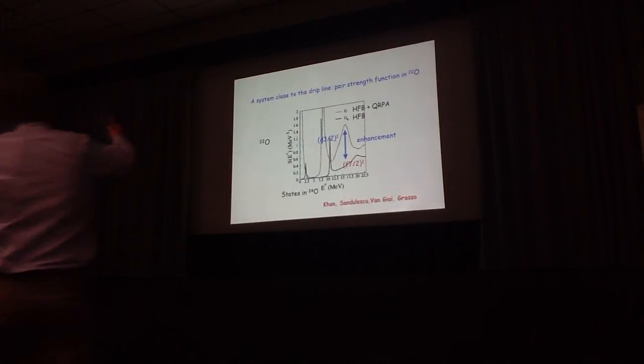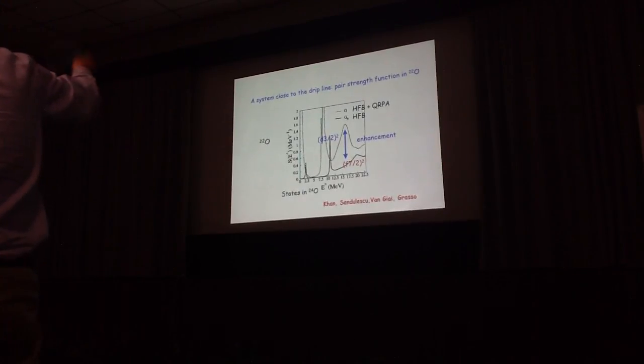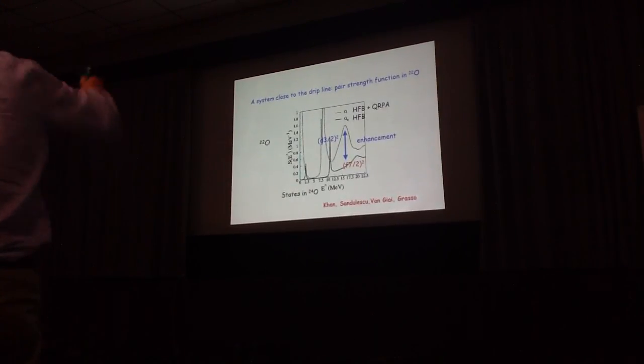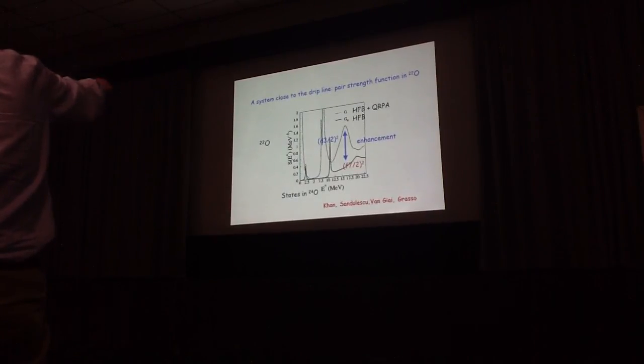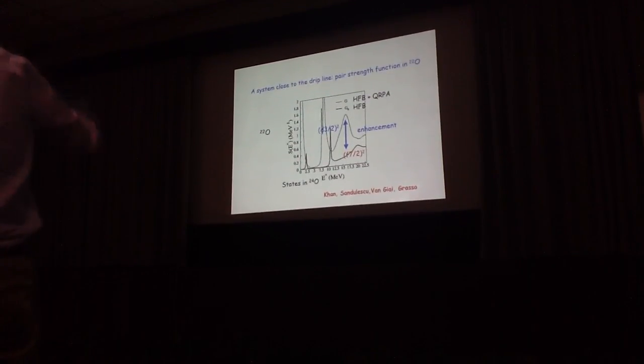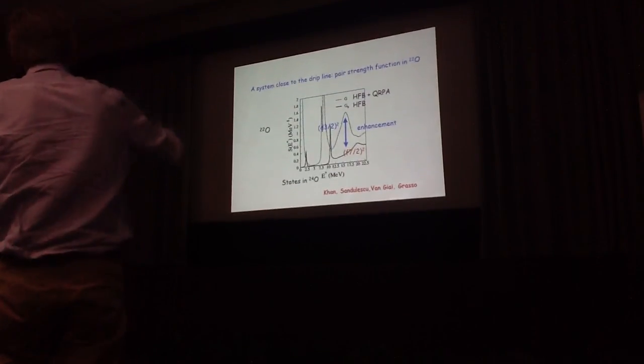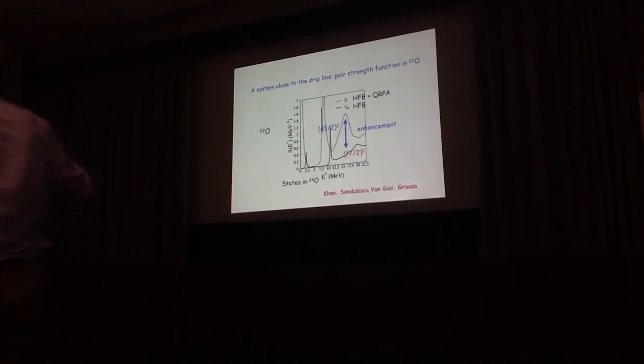Another example, if you now approach the drip line, this is oxygen-22. Again, you can calculate in R3-Fock-Bogoliubov plus QRPA the two-particle response. And again, you can compare the unperturbed response with the perturbed response, and the enhancement that you obtain is what you say is due to the effect of the pairing interaction.